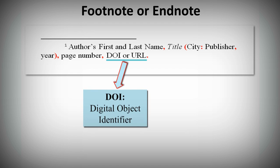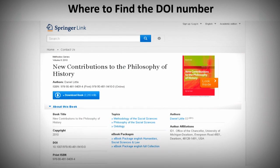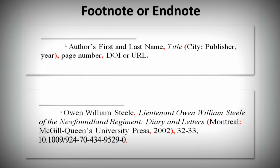The DOI is the digital object identifier. Some ebooks you access through the library may have a DOI. For example, this ebook from SpringerLink displays a DOI number in the ebook's record. If the ebook has a DOI number, you would enter it at the end of the citation, after the page number.